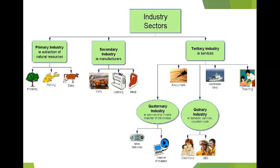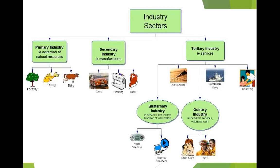We can also look at commodity chains and industry sectors. Primary and secondary are at the top; tertiary is on the right; and underneath tertiary, you have quaternary and quinary — the additional sub-sectors we've been discussing.